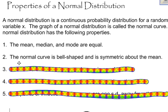So that leads us to the next one. It says that the normal curve is bell-shaped and symmetric about the mean. In other words, the mean is right in the middle of your distribution.